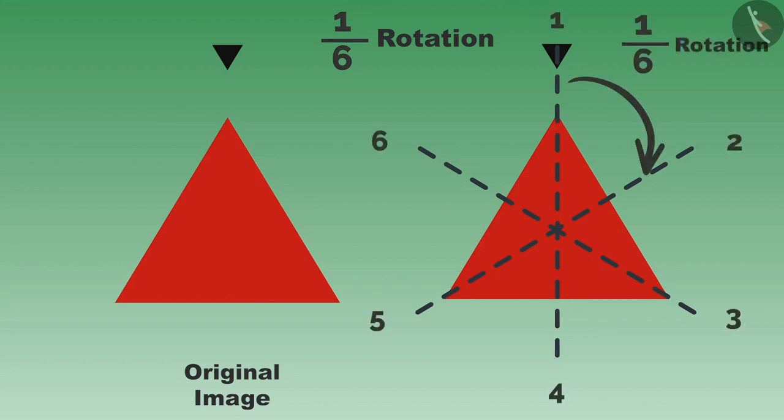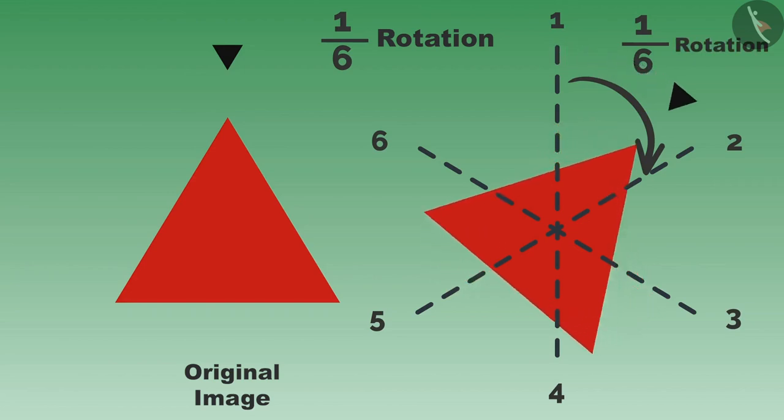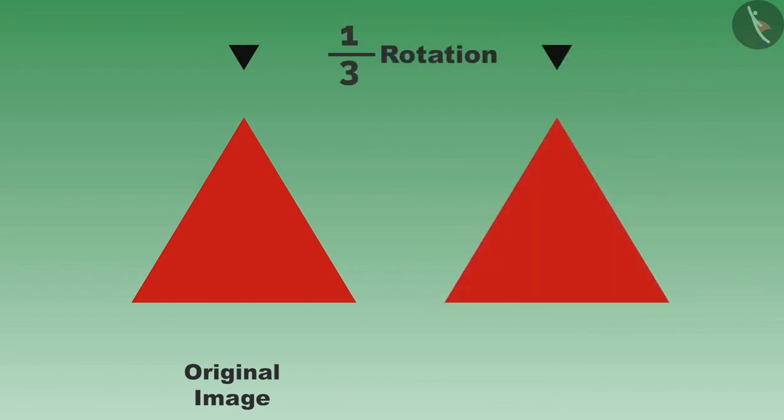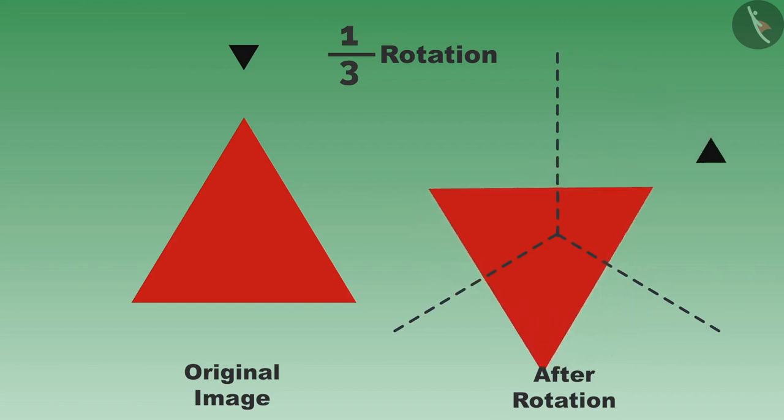If you have to do a one-sixth rotation, then rotate this picture in this way. If we have to do one-third rotation, then we will divide it into three equal parts across the center. Draw the lines in this way. You can see that three lines are passing through the center of this picture. Now rotate this picture in this manner and look at this one-third rotation.